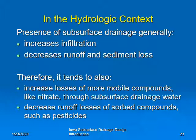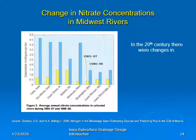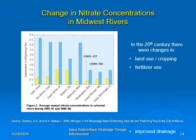In the next few slides, we're going to consider the effects of increased nitrate transport via subsurface drainage. This slide illustrates the changes that occurred in nitrate concentrations in Midwest rivers over the last century. So the question is, what's changed? Why have these nitrate concentrations gone from relatively low levels — the yellow bars — to relatively high levels, the blue bars? In the 20th century, we saw major changes in land use cropping and a major increase in subsurface drainage.